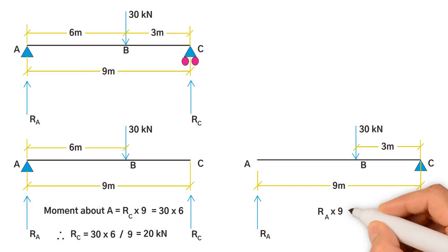We can write 9 R_A is equal to 30 times 3. Therefore, R_A is equal to 30 by 3 divided by 9 meters, which equals 10 kN.